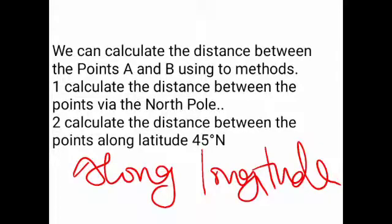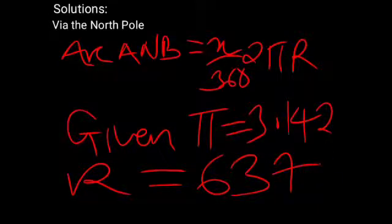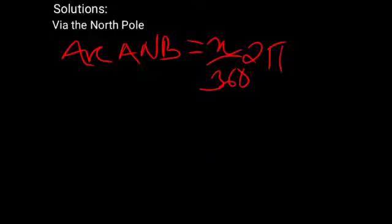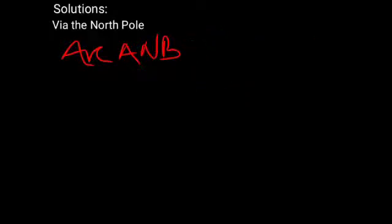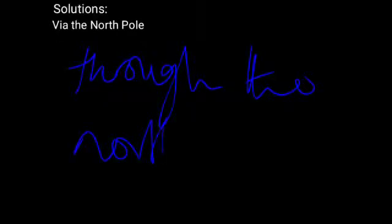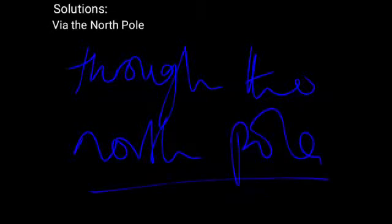If you calculate along the longitudes, you will find the shortest distance, and this should be through the north pole. Calculating through the north pole will give us the shortest possible distance.